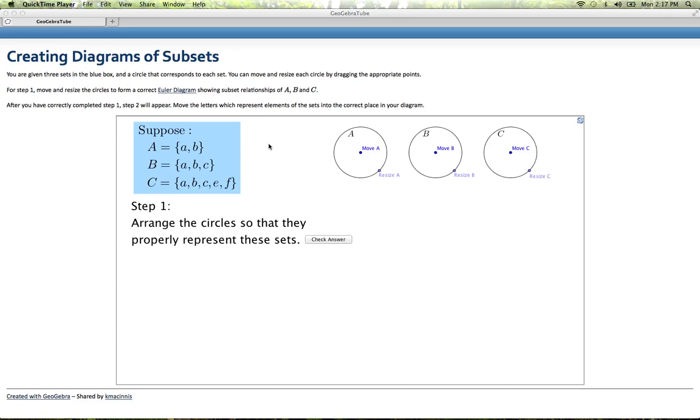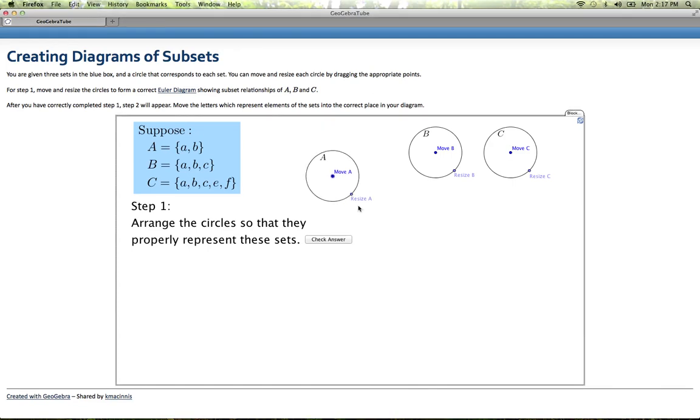We want to create this Euler diagram to show the subset relationships between the sets A, B, and C that we're told here. We have these three circles to represent our three sets, and we can move them around by dragging the centers of the circles. We can resize them by dragging these resize points, and this is what we'll use to create our diagram.